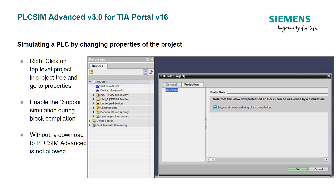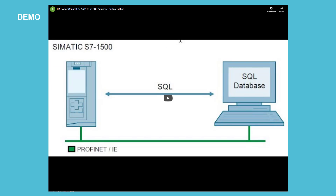For this application example, we are going to be using PLC SIM Advanced version 3.0 for TIA Portal v16. Simulating a PLC by changing the properties of the project is required. To do this, right-click on the top level of the project in the project tree and go to the properties. Enable the support simulation during block compilation feature — without it, a download to PLC SIM Advanced is not allowed. A video has already been created featuring how to connect an S7-1500 to an SQL database — the virtual edition — showing a PLC created using PLC SIM Advanced version 3.0 with TIA Portal v16 and a VMware running Microsoft SQL Server.